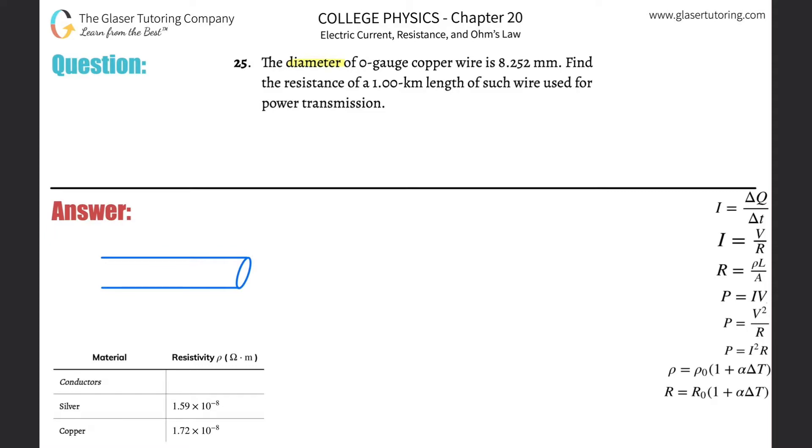Number 25: The diameter of a zero gauge copper wire is 8.252 millimeters. Find the resistance of a one kilometer length of such wire used for power transmission. All right, so first thing is check out number 24. I went through a detailed discussion of what resistance is and how it's a function of resistivity, length, and area.